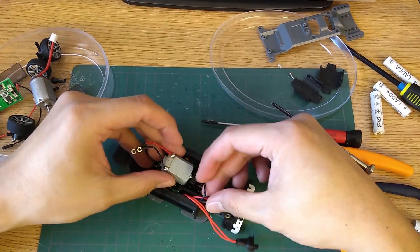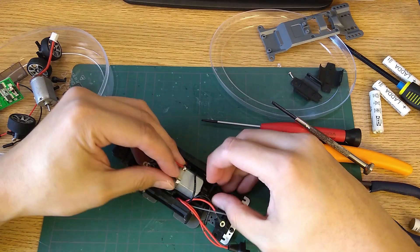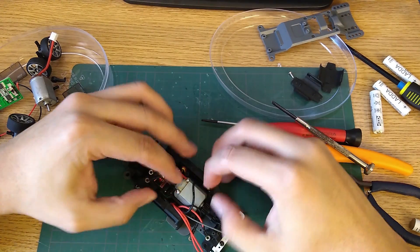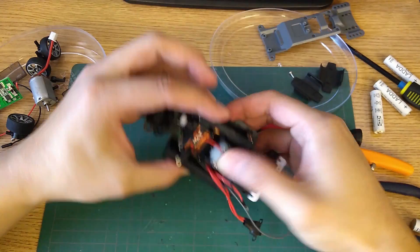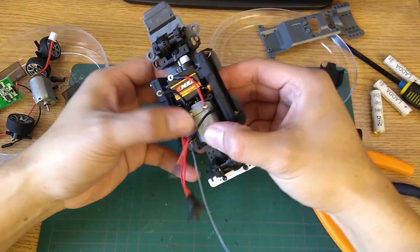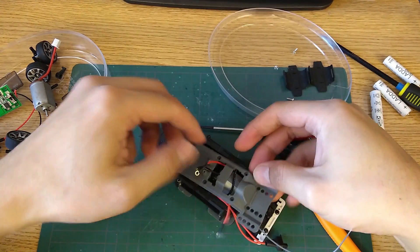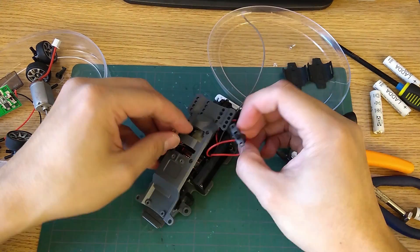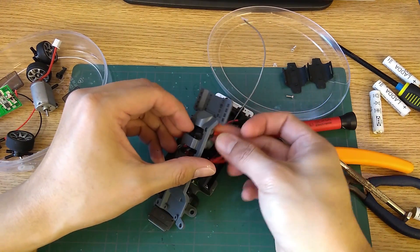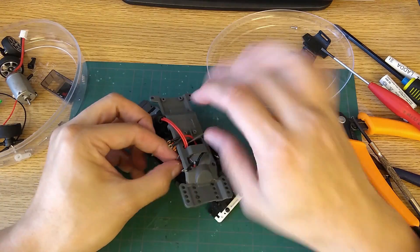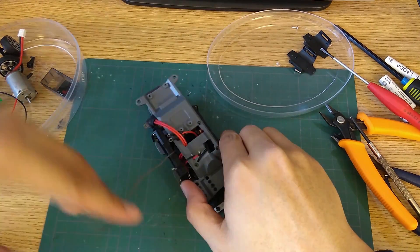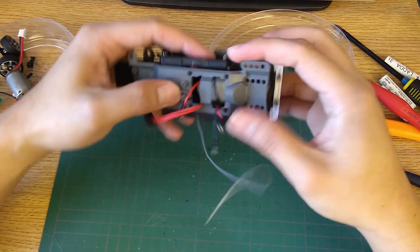Now put the motor in and then put the top plate on and run the wires through it. The wires that are coming out of the top are motor wires both from the motor and ESC, switch and the antenna.